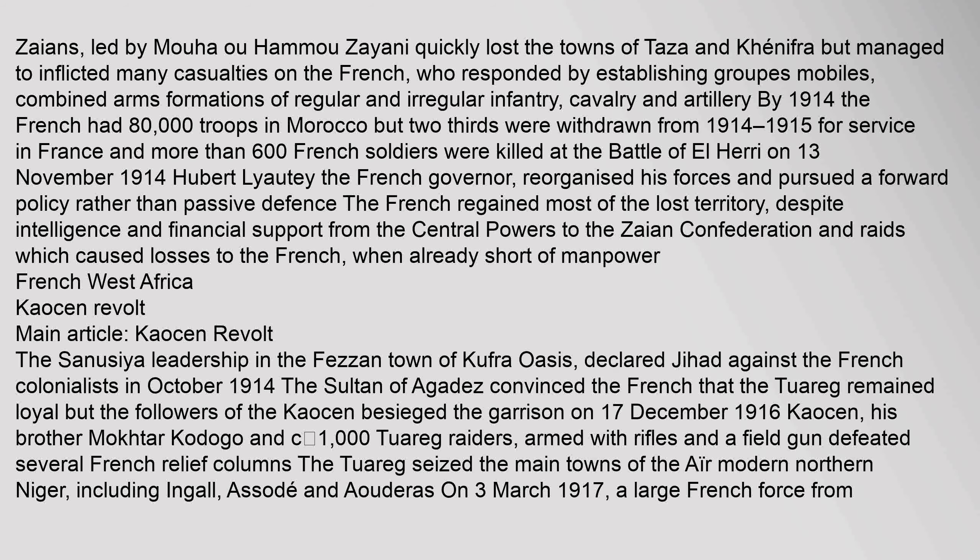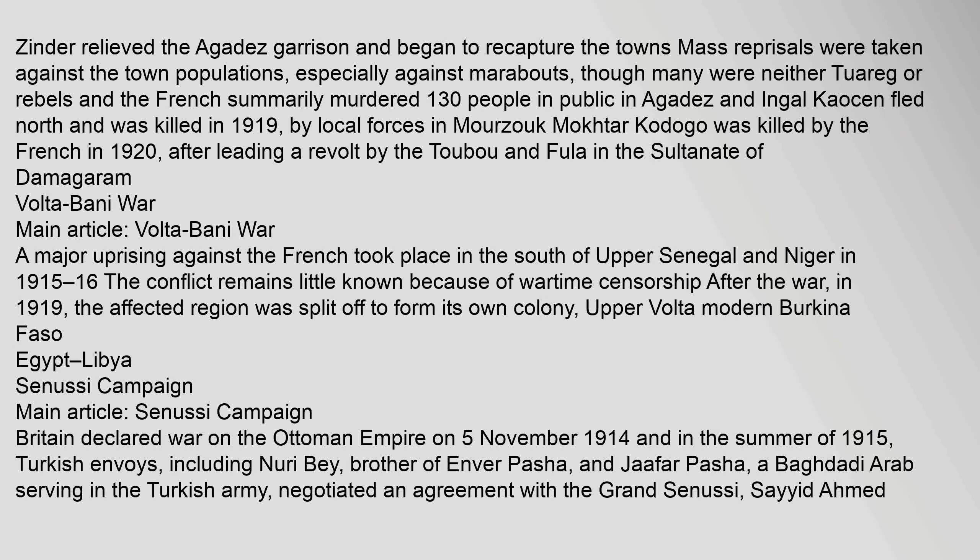French West Africa — Caousin Revolt: The Senussi leadership in the Fasan town of Kufra Oasis declared Jihad against the French colonialists. In October 1914, the Sultan of Agadez convinced the French that the Tuareg remained loyal, but the followers of Caousin besieged the garrison on 17 December 1916. Caousin, his brother Mokhtar Khodogo, and some 1,000 Tuareg raiders, armed with rifles and a field gun, defeated several French relief columns. The Tuareg seized the main towns of the air, in modern northern Niger, including Ingal, Asaday, and Aoudaras. On 3 March 1917, a large French force from Zinder relieved the Agadez garrison. Mass reprisals were taken against the town populations, and the French summarily murdered 130 people in Agadez and Ingal. Caousin fled north and was killed in 1919 by local forces in Murzuk. Mokhtar Khodogo was killed by the French in 1920 after leading a revolt by the Toubou and Foula in the Sultanate of Damergou.